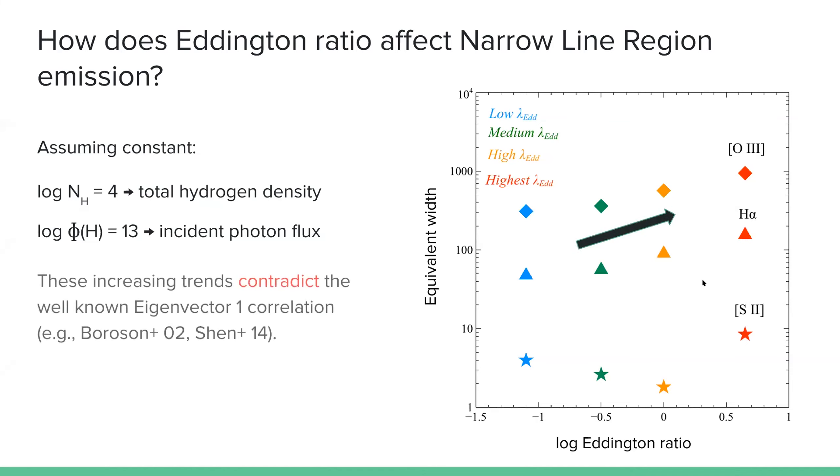However, this is problematic because in the actual observations, the correlation should be the opposite way. So this contradicts the well-known Eigenvector 1 correlation.